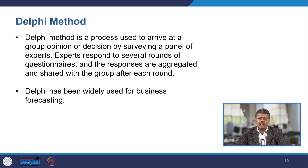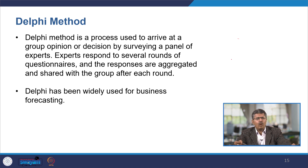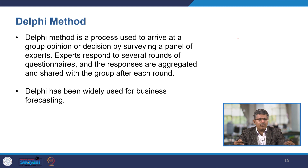In the Delphi method, experts respond to several rounds of questionnaires, and the responses are aggregated and shared with the group after each round. Then participants are asked to make any changes they want. A second round of collection is done, aggregation is performed again, and some interpretation is made. This process continues until a unanimous decision or consensus is reached.